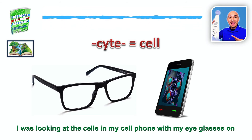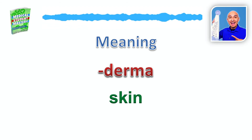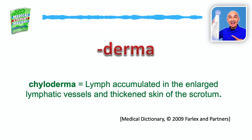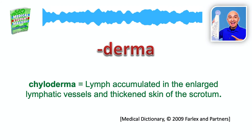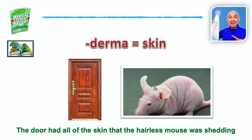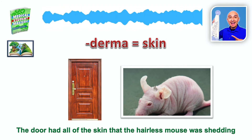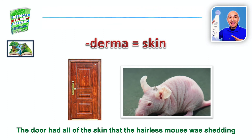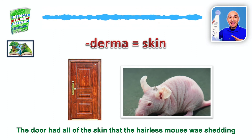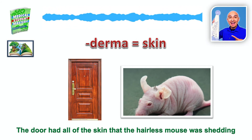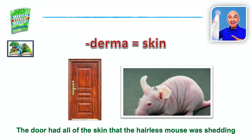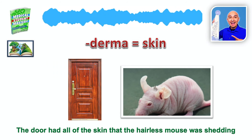So -cyte means cell. Last one here: derma. Derma means skin. My word used is chyloderma, which means lymph accumulated in the enlarged lymphatic vessels and thickened skin of the scrotum. For -derma, I would picture a door with a mouse. And for the skin, just skin. So you can picture the door had all the skin that the hairless mouse was shedding over the years — the door just full of mouse skin. The more vivid you make it, the easier it is to remember. So see the little mouse trying to grab the skin from the door.